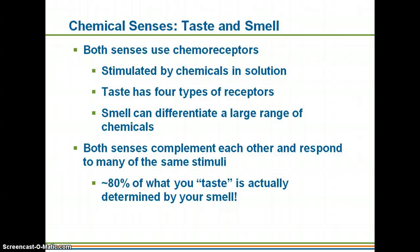Looking at both chemical senses — taste and smell — they both use chemoreceptors, and the chemicals must be dissolved in a solution: dissolved in saliva for taste, and dissolved in mucus for smell. Taste has five types of receptors, while smell can differentiate a very large range of chemicals, as the jelly bean demonstration in class showed. Both senses complement each other — if you remove smell, food doesn't taste as good, and vice versa. The majority of what we consider flavor is actually determined by our sense of smell.